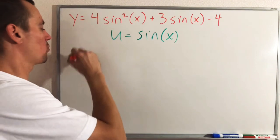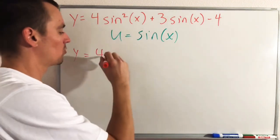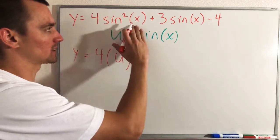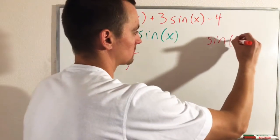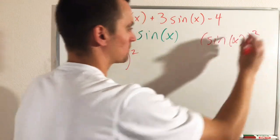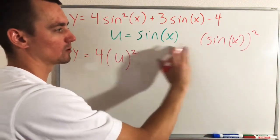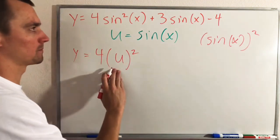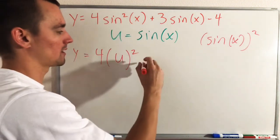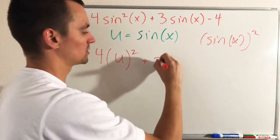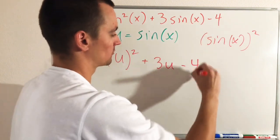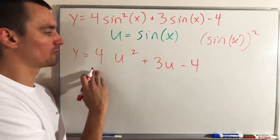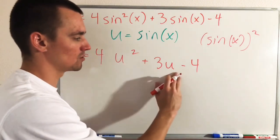Knowing that u equals sine of x, we go back through our original function and wherever we see sine of x we replace it with u. So up here we'll have y equals 4 times u squared, because sine squared of x is the same as sine of x all squared — if u equals sine of x, that's just u squared. Then sine of x becomes u, giving us 3u minus 4. So now we just have y equals 4u squared plus 3u minus 4.